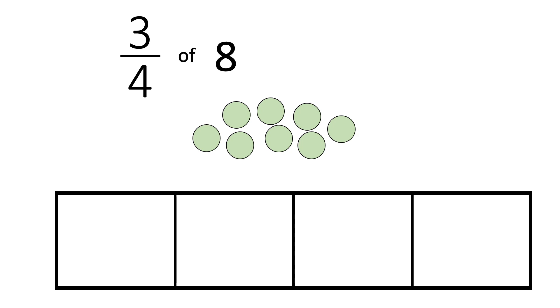First thing we'll do is find out how many counters fit into one quarter. So let's split these counters equally into each quarter. Now we can see that one quarter of eight is two.